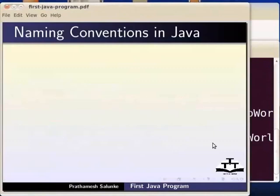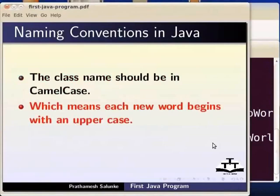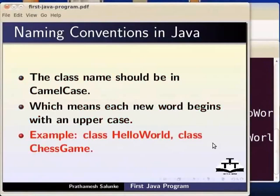Now we will discuss the naming convention for Java. For a class name, use CamelCase — each word starts with a capital letter. For example: class HelloWorld, class ChessGame. H is capitalized in Hello and W is capitalized in World.